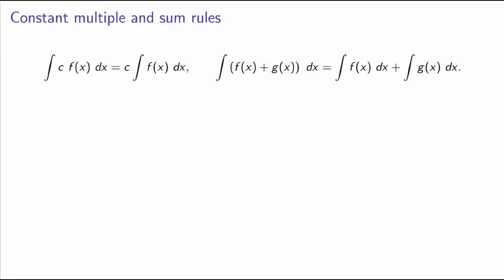Now that we've defined antiderivatives and indefinite integrals, we can try to evaluate those. Since we know this is an inverse process to differentiation, one thing we can do is try to undo all the differentiation rules we've seen. Let me start with the constant multiple rule and the sum rule. The inverse of the constant multiple rule says that the integral of a constant times a function is the same as the constant times the general antiderivative of that function. Similarly, for the sum rule, the general antiderivative of the sum of two functions is the sum of the antiderivatives. I'm going to prove the first statement; the proof of the second goes along a very similar line.